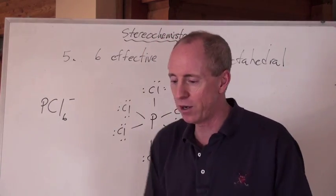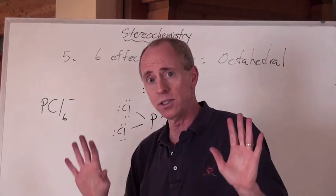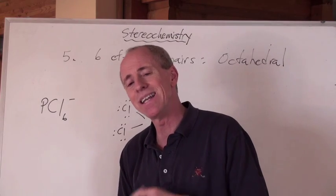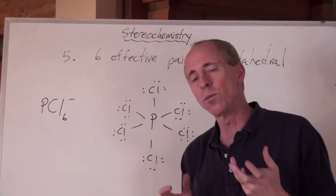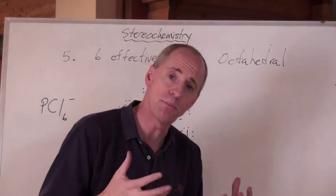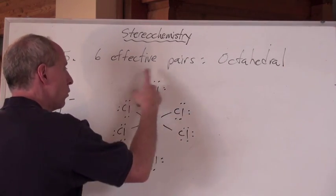Now, the six effective pairs, and by the way, here's a formula that's absolutely possible to make: PCl6 with a negative one charge. And even though the phosphorus doesn't really do its formal charge of zero here, this one is possible. It's not optimal, but it's possible. And what you're going to get is six Cls around that center.